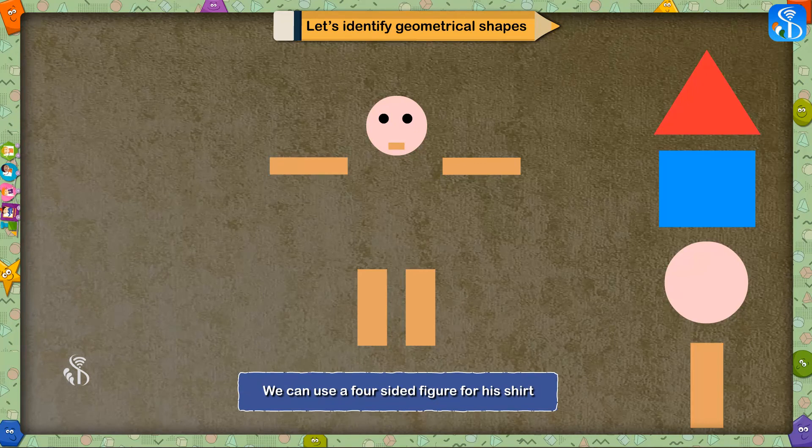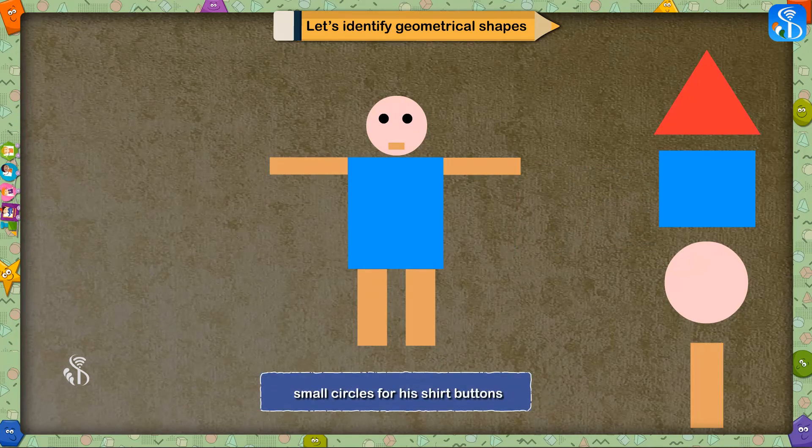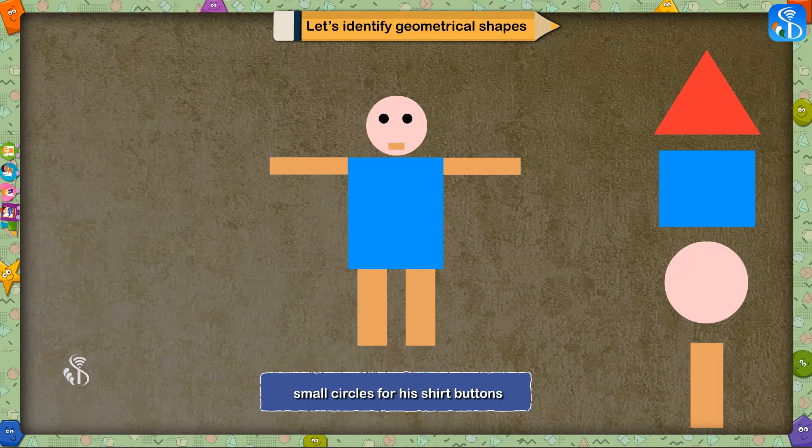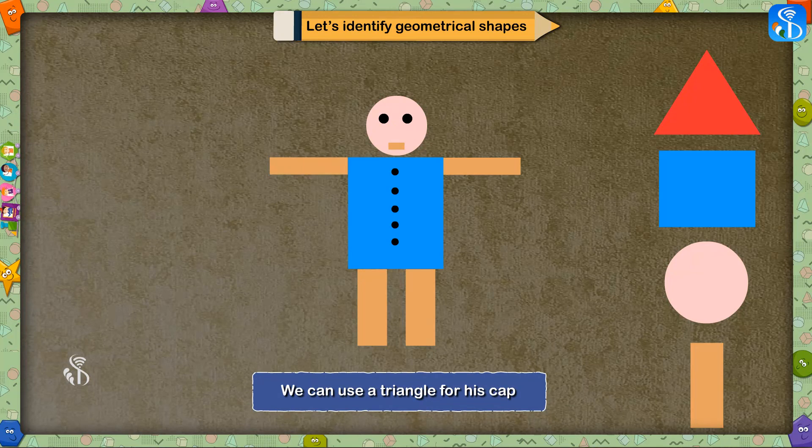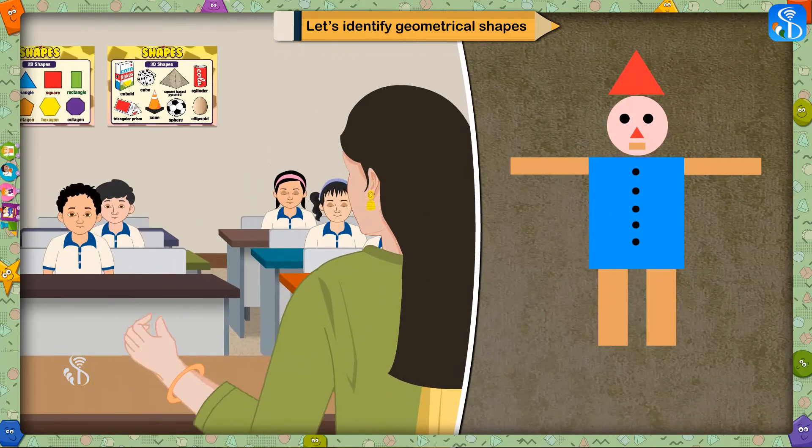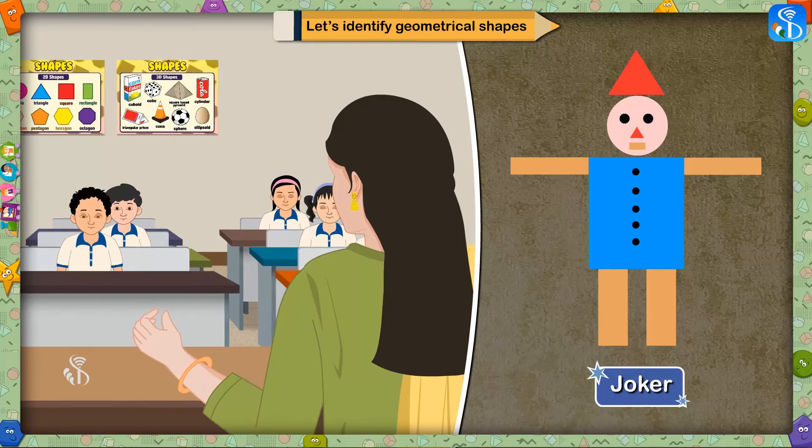We can use a four-sided figure for his shirt and small circles for his shirt buttons. We can use a triangle for his cap.